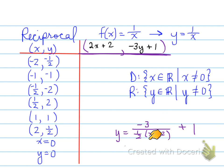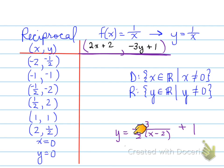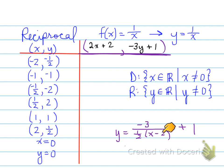The function y equals this whole expression means the numerator affects y and the denominator affects x. So negative 3 over 1 half x minus 2, plus 1. Let's describe the transformations: vertically reflect, vertically stretch by a factor of 3, horizontally stretch by a factor of 2, horizontally translate right 2, and then we add 1 vertically. That is your reciprocal function. Don't forget to apply it in the table and include all coordinates and asymptotes.